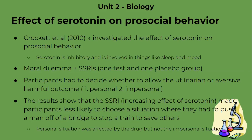The results showed that the group with the SSRI — the one with the increased effect of serotonin — made participants less likely to choose a situation where they had to personally hurt someone. The personal situation was the one affected, because people with more serotonin engaged in more pro-social behavior, meaning they wanted to be more socially caring. So people who took this drug were less likely to push someone off a bridge or cliff, as they were more pro-social as a result of increased serotonin. The impersonal situation was not affected.